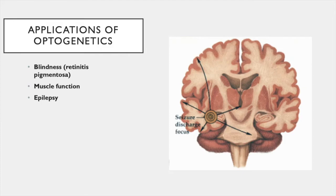Another potential application of optogenetics is in epilepsy. During epilepsy, neurons in a particular focal area become overactive and fire in a synchronous pattern that can cause a spread of neural activity throughout the brain, causing seizures. To prevent seizures, an inhibitory channelrhodopsin virus can be injected into the focal area. A device can then be implanted into that area which can detect the onset of an epileptic attack and flash a light, helping stop the attack before it even begins.